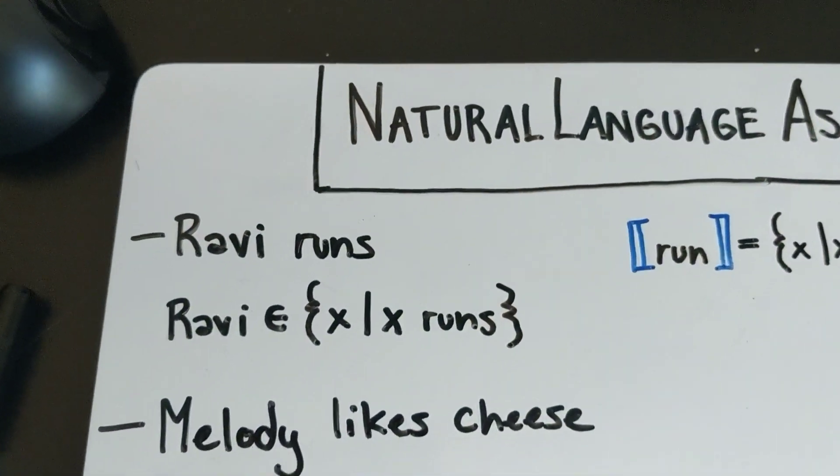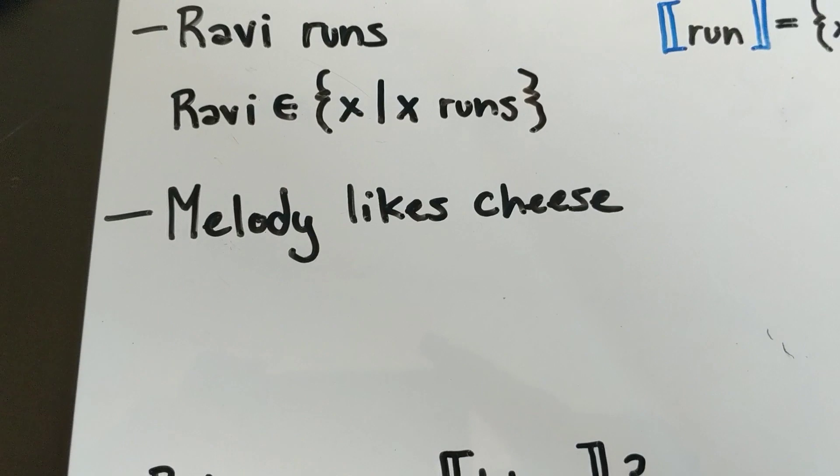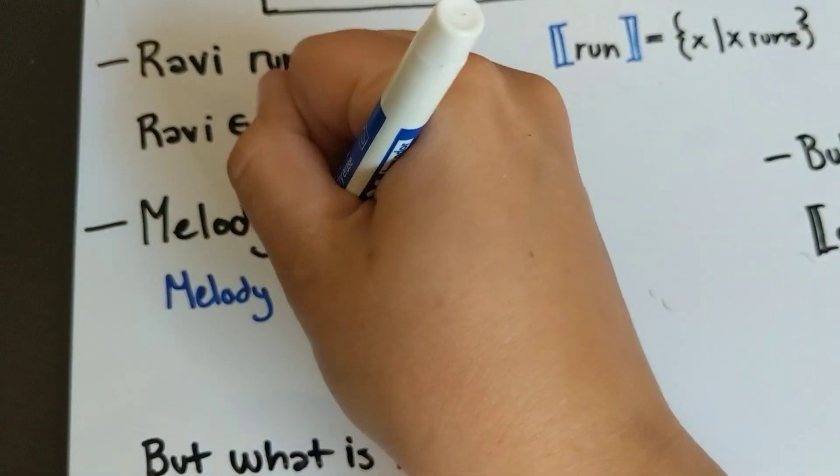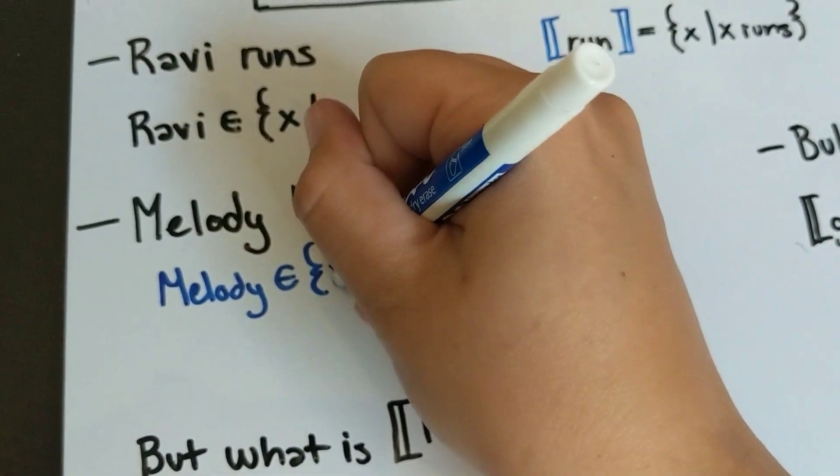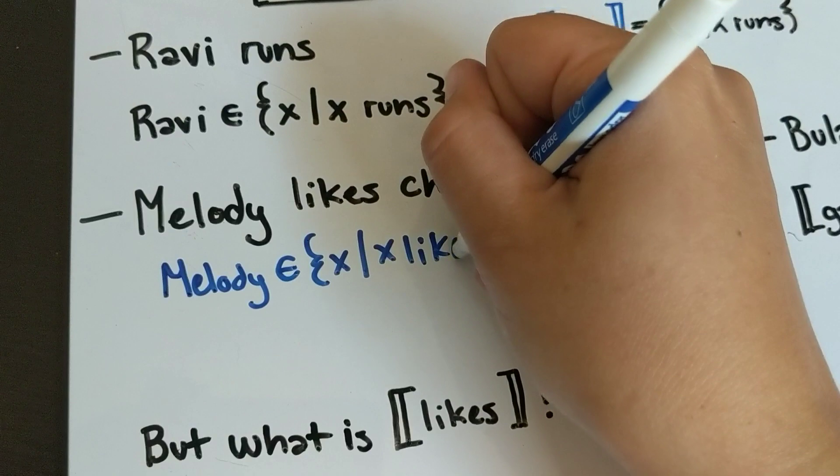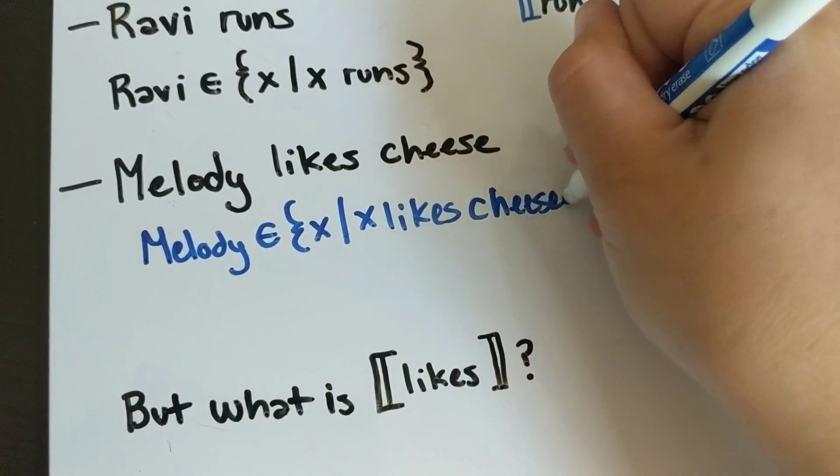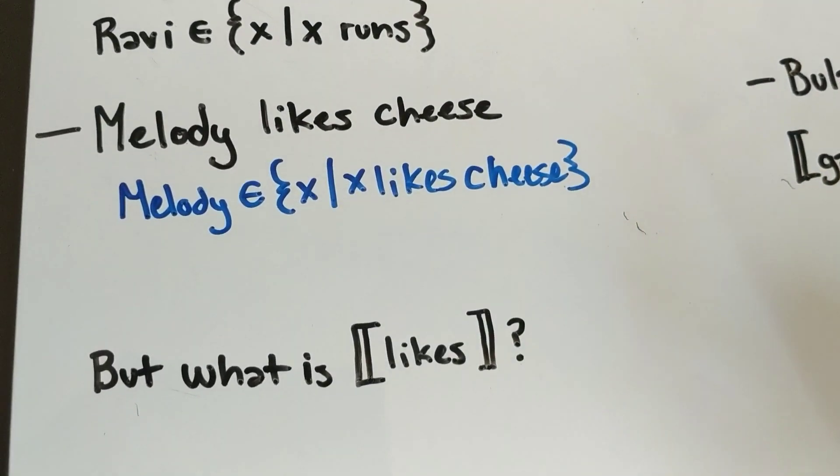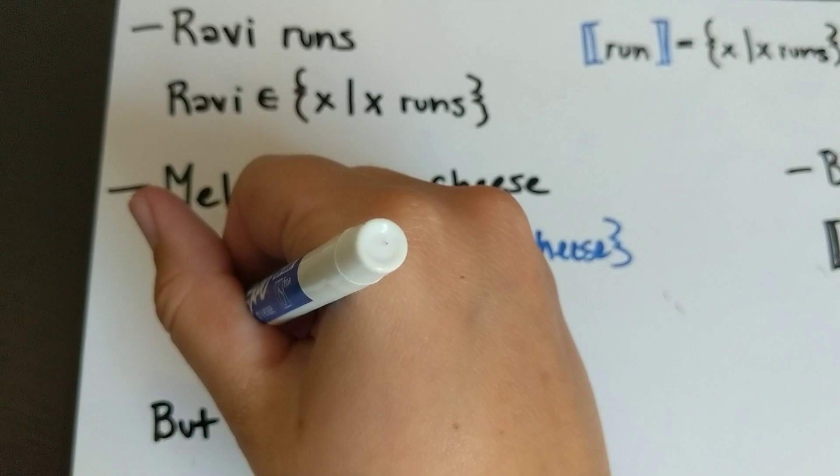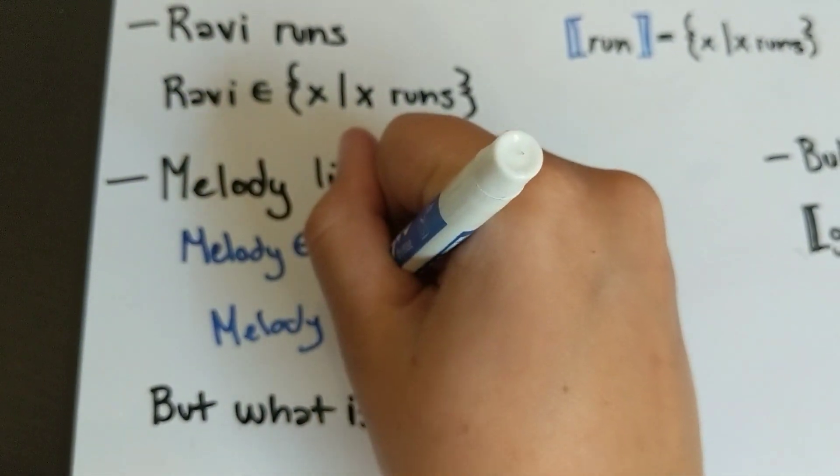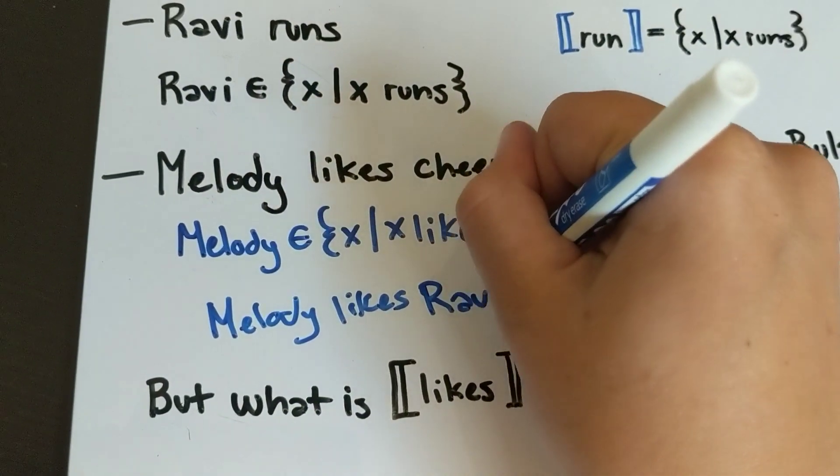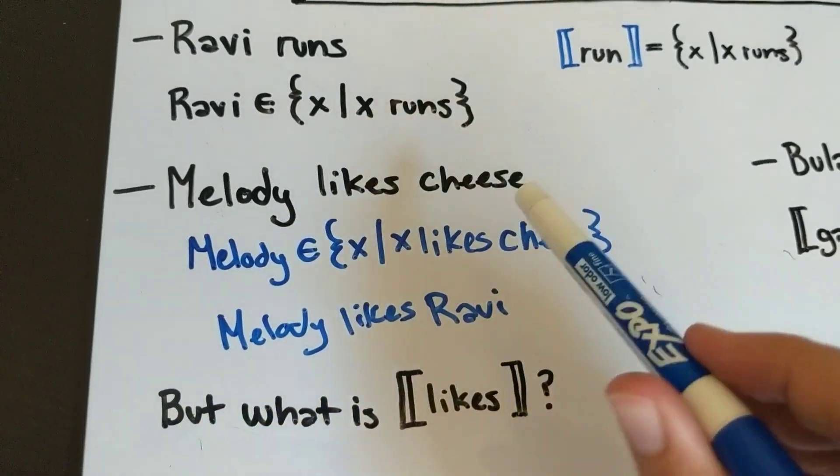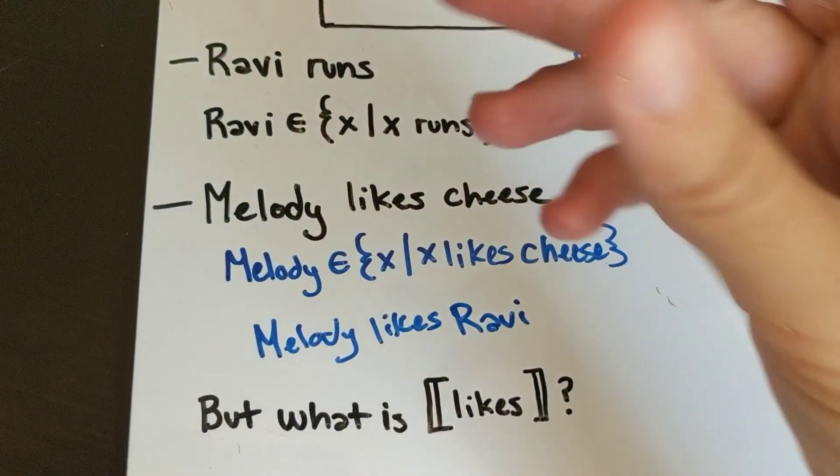This becomes a lot more difficult when we have sentences like 'Melody likes cheese.' We could say that the meaning of this sentence is Melody is a member of the set of things x such that x likes cheese. This does represent the meaning of the sentence; this is a correct way to represent it. But it creates some problems when we start introducing things like 'Melody likes Ravi.' Now are we going to have to create a whole other meaning for 'likes'? This is making us say that if we want to say that the meaning of this sentence is essentially just Melody combining with the meaning of...